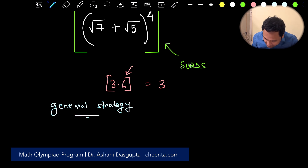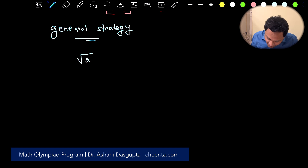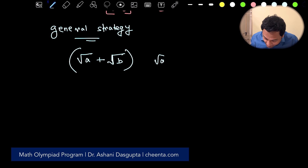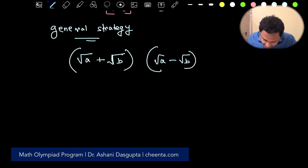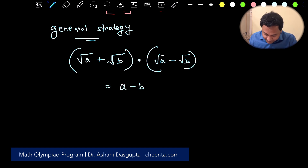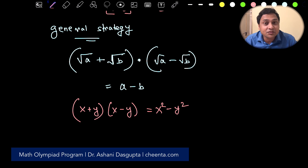What you do is add, subtract, or multiply by the conjugate. The conjugate of (√a + √b) is (√a − √b). The general inclination is to multiply, because using the formula (x + y)(x − y) = x² − y², the irrational terms cancel and it becomes easier to simplify.